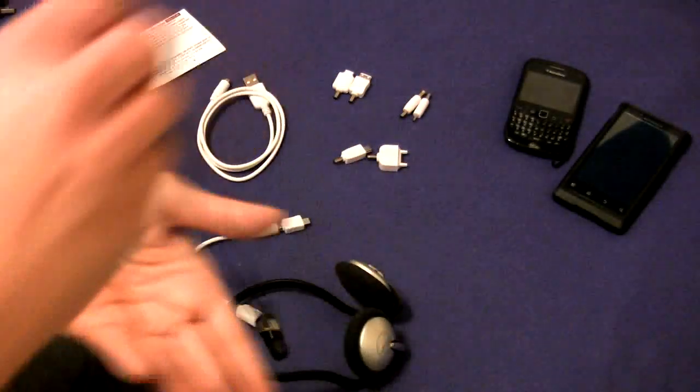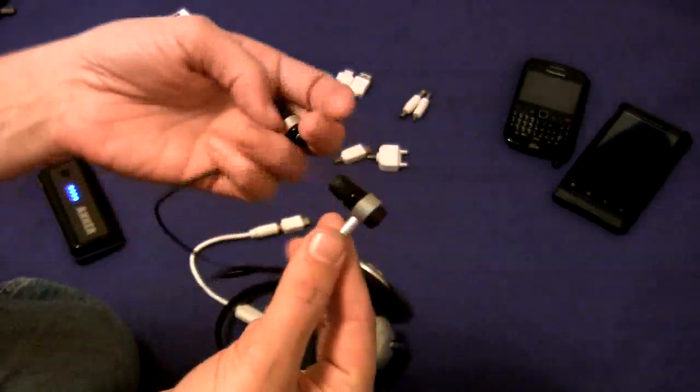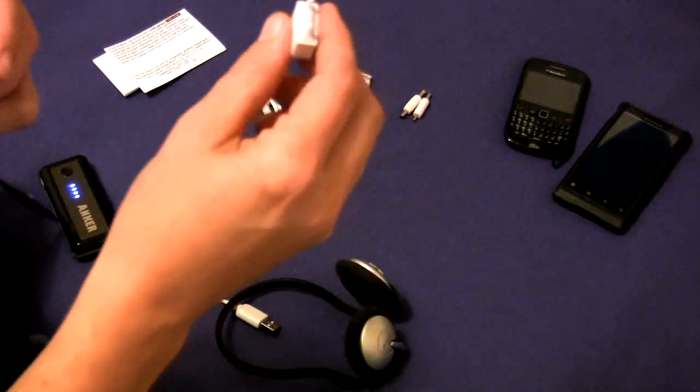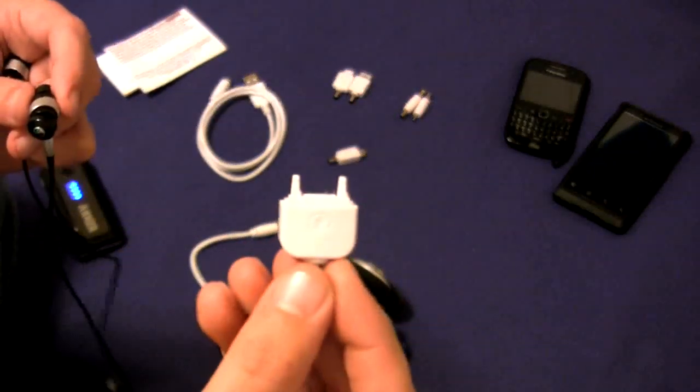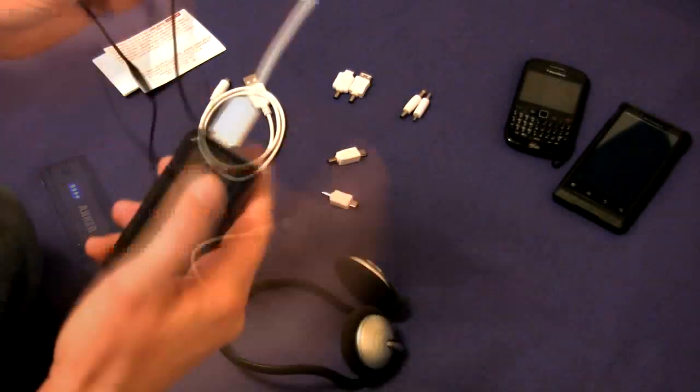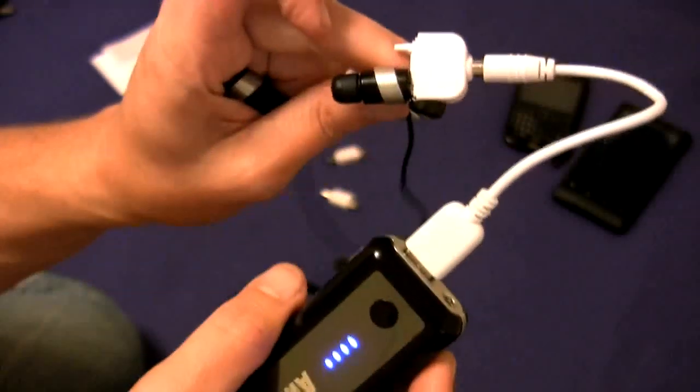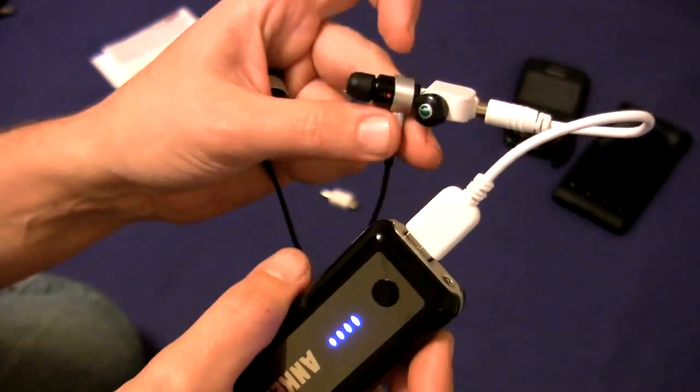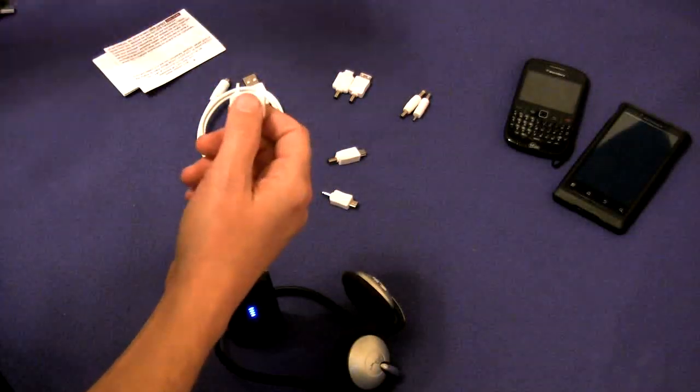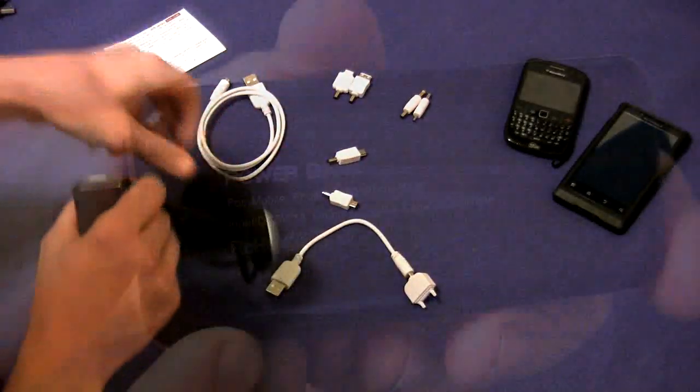My Sony Ericsson HBH-IS800 Bluetooth headphones. I was really surprised about this, but as you'll see right here, this is the Sony Ericsson adapter for it right there. So I'm going to plug this in right here and hit the power button. And as you can see, the red indicator light is on. So it's actually charging my headphone unit there. So I'm very happy with this. I got to say, so far, everything I have that is USB powered is able to be charged on this.